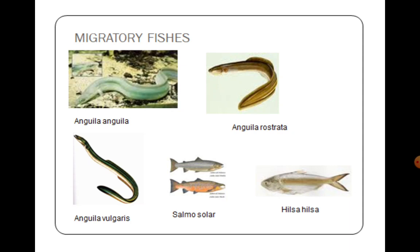These are some examples of migratory fishes. In further discussion about different types of migration, we will be calling out these names, so it helps to have a look at these species: Anguilla anguilla (the eel), Anguilla rostrata (also an eel), Anguilla vulgaris, Salmo salar, and Hilsa hilsa. These are the major migratory fishes.